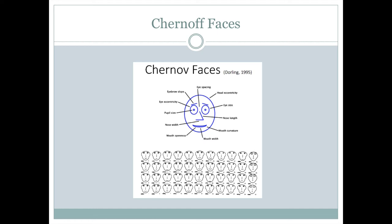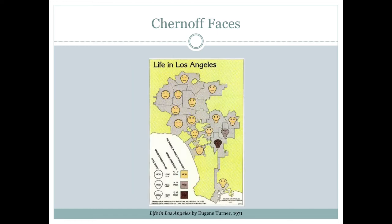Let's look at a couple of examples. The first one is an older, historical map from 1971, called "Life in Los Angeles." Jean Turner used the shape of the head to indicate affluence — so if someone is well fed, they have a nice round face. If they're not as rich, maybe they're going a little hungry and look a little more drawn. If the unemployment rate is low, they have a big smile; if the unemployment rate is high, they have a frown.